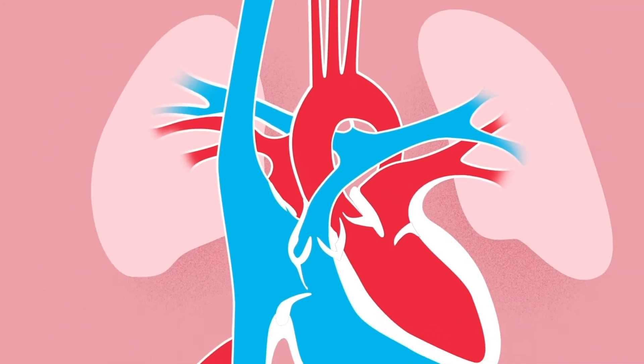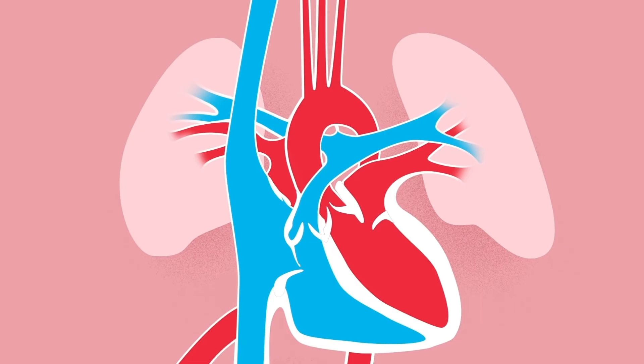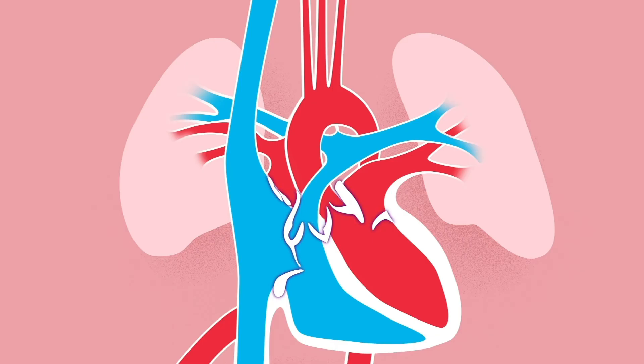Using the fetal echocardiogram, we can see the size and connections of all the blood vessels, the structure of all four heart valves and how they are working, and the size and the function of all four heart chambers.